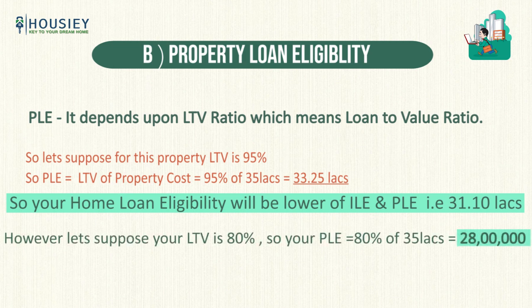Now let's suppose the LTV ratio is 80%. Then the property loan eligibility becomes 80% of ₹35 lakhs, which is ₹28 lakhs. In this case, even though your income supports ₹31.11 lakhs, the home loan eligibility will be ₹28 lakhs — the lower of both values. This is how home loan eligibility is calculated.